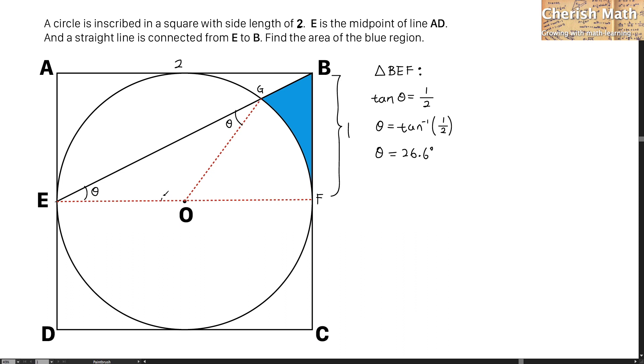And I am going to find what is the value of this angle by using this supplementary angle. For this angle, it is 126.8 degrees. I got it by using 180 degrees minus theta, which is 26.6, and minus another theta, and I got the value here, 126.8 degrees.